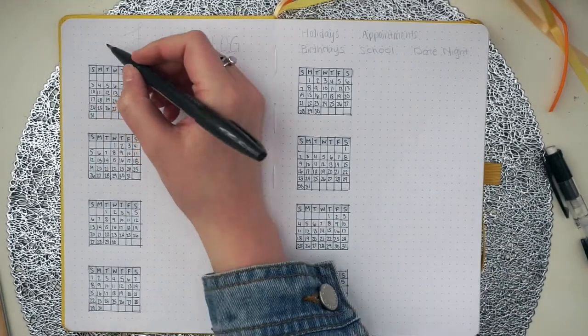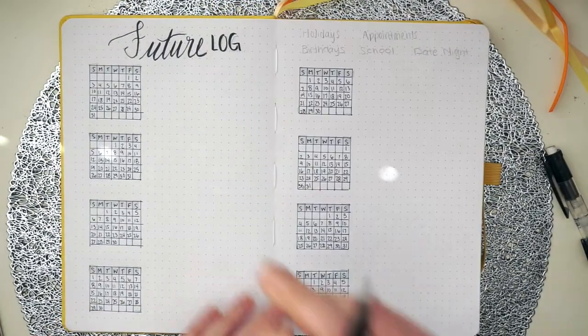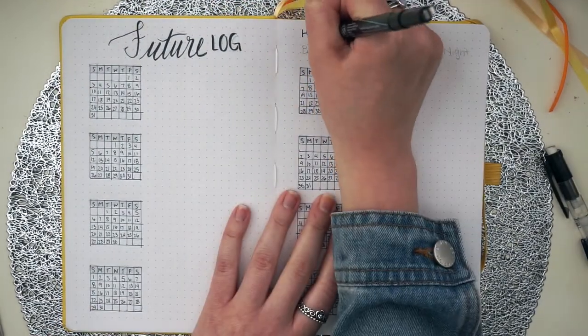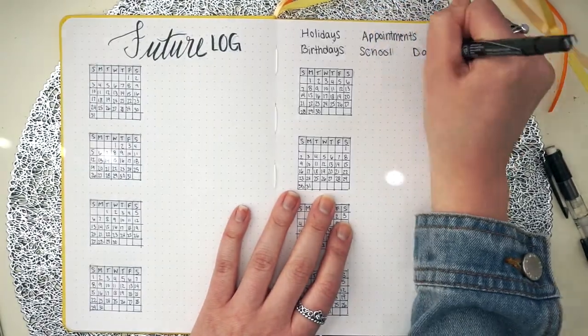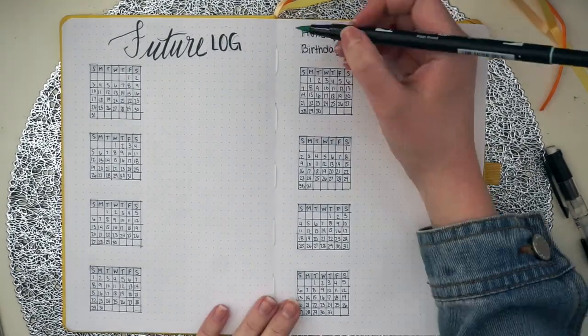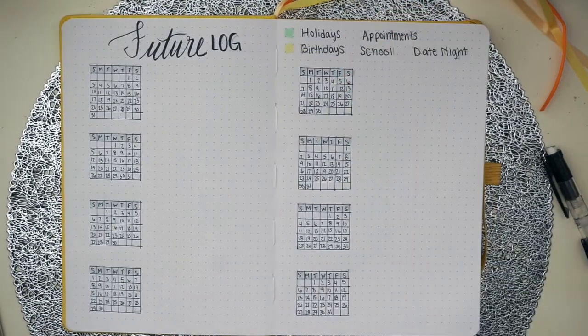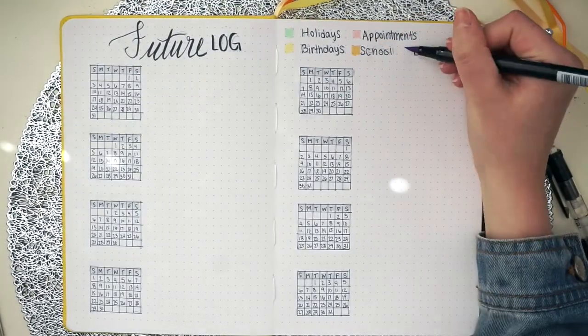Here I'm taking my Pentel sign pen in black and writing out future log at the top of the page and then I'm going to take my Prismacolor 03 fineliner and writing out holidays, birthdays, appointments, school, and date night. This will be my key and I color code it with green, yellow, pink, orange, and a periwinkle color.